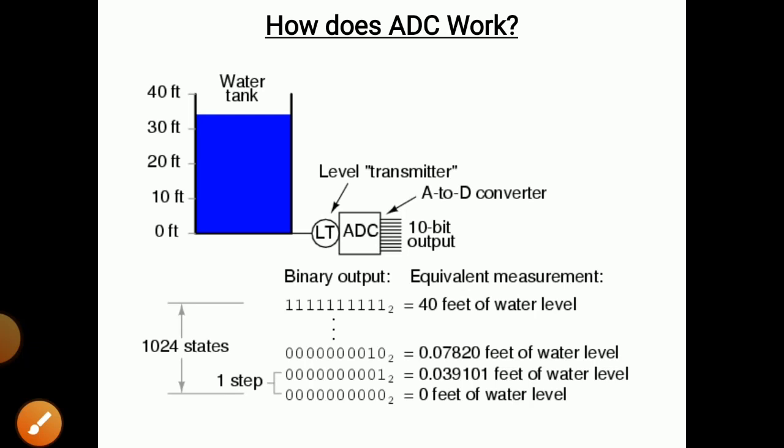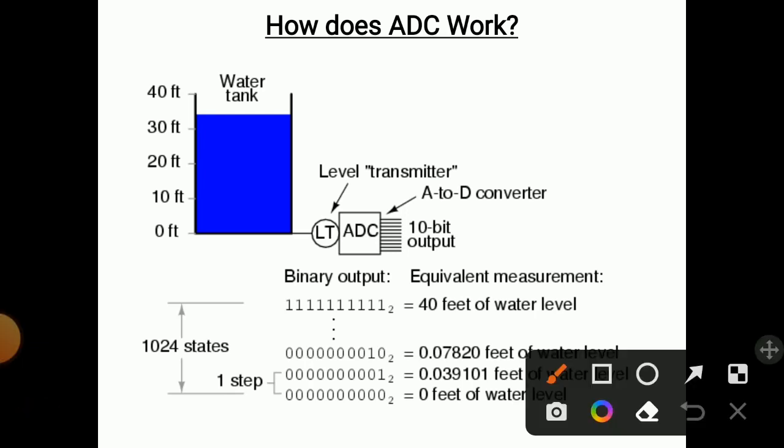Here one example is shown. There is a water tank with a height from 0 feet up to 40 feet. To measure that height, there is a level measurement shown with a level transmitter. That level transmitter gives an analog signal to the analog to digital converter, and that converter produces a 10-bit output. So we have: water tank, level transmitter, analog to digital converter, and we get a 10-bit output. This is how analog to digital conversion takes place.